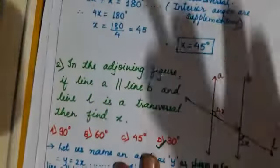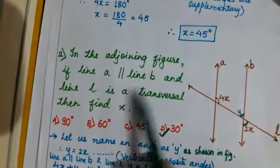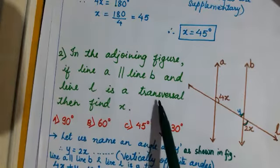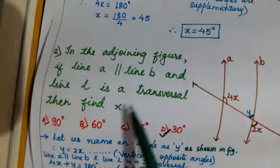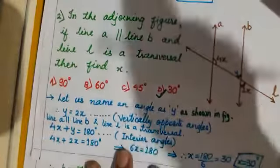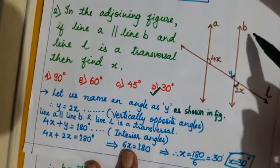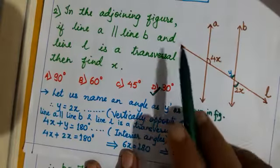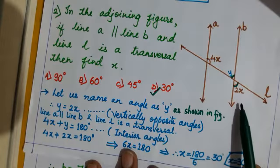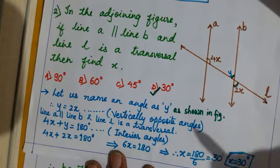Now the second question: in the adjoining figure, if lines a and b are parallel and line l is a transversal, find x. In the figure, line a and b are parallel and line l is a transversal. Angles 4x and 2x are given; we have to find x.